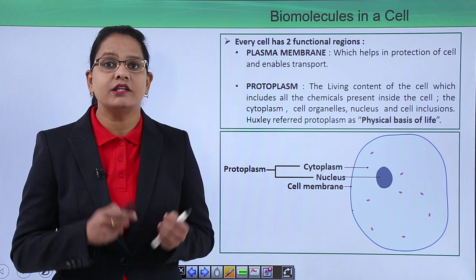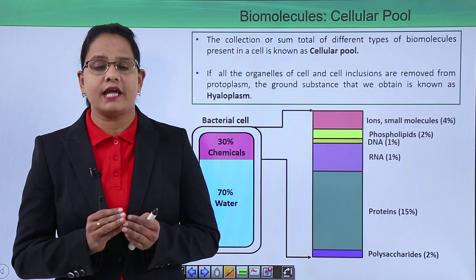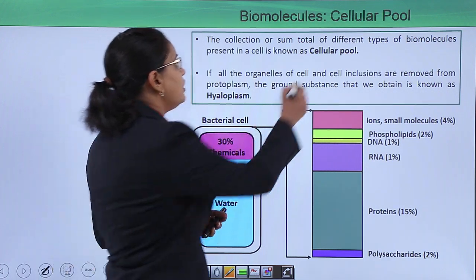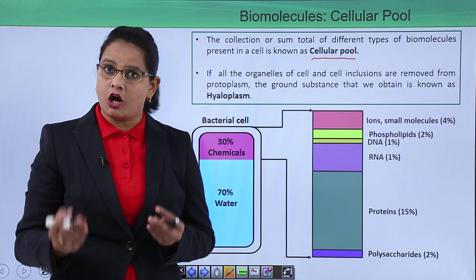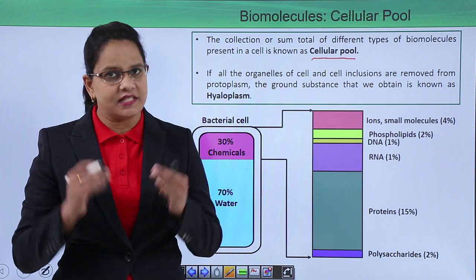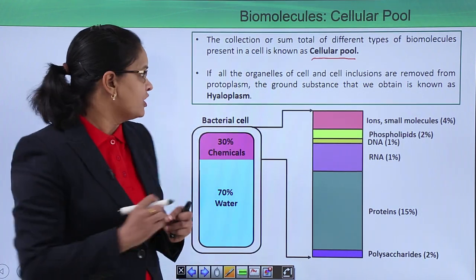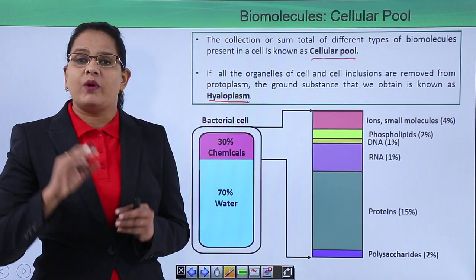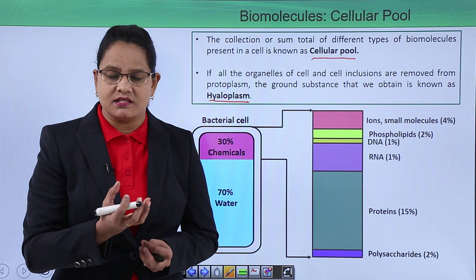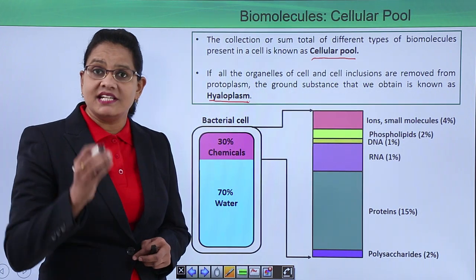The protoplasm is the living component of the cell — it is all the chemicals present inside the cell including the cytoplasm and the nucleus. The sum total or collection of all the chemicals or biomolecules present inside the cell is known as the cellular pool. Another related term is hyaloplasm: when all the organelles and inclusions are removed from the cell, the ground substance obtained is known as hyaloplasm.